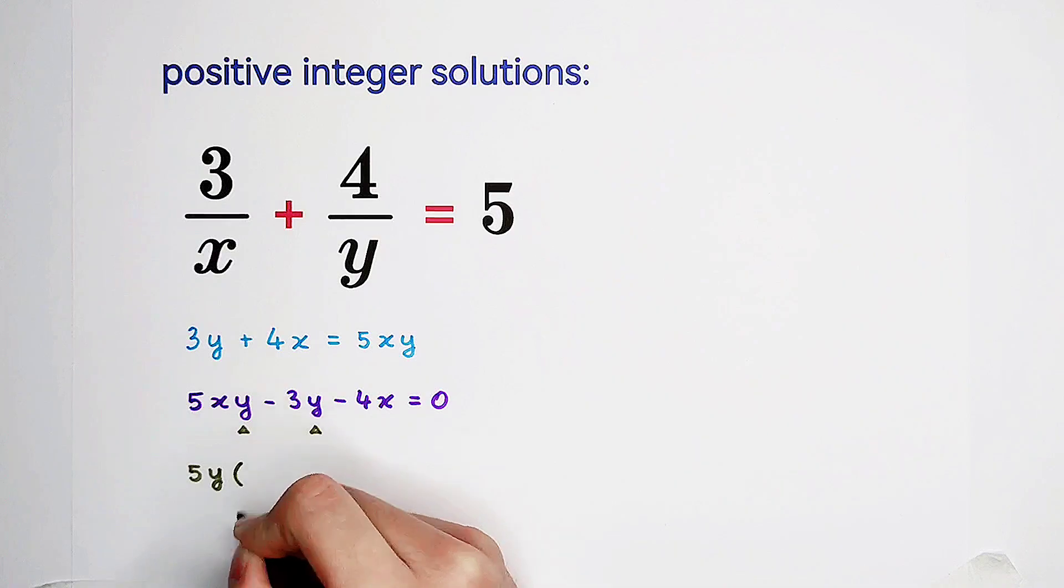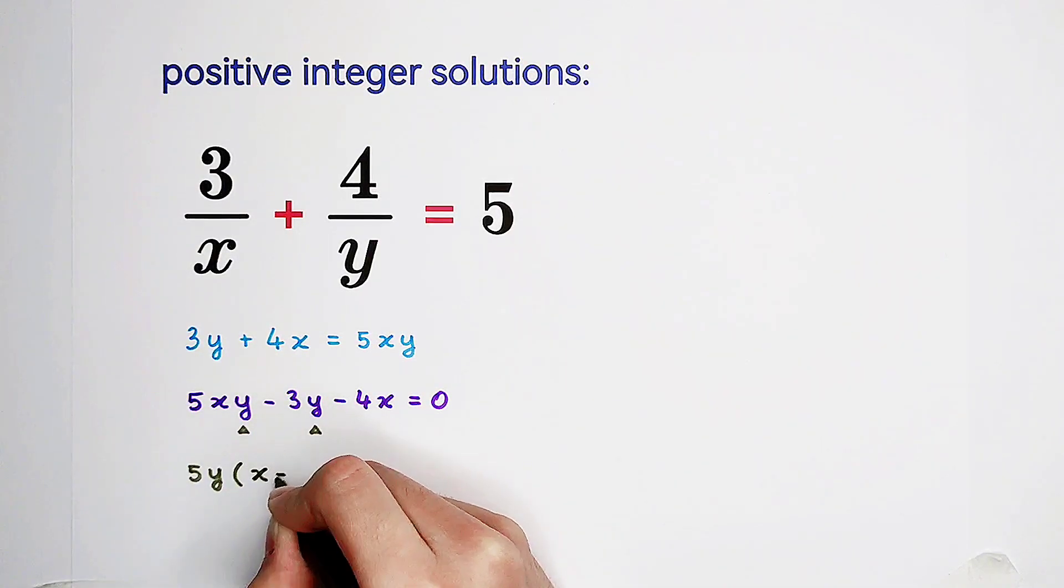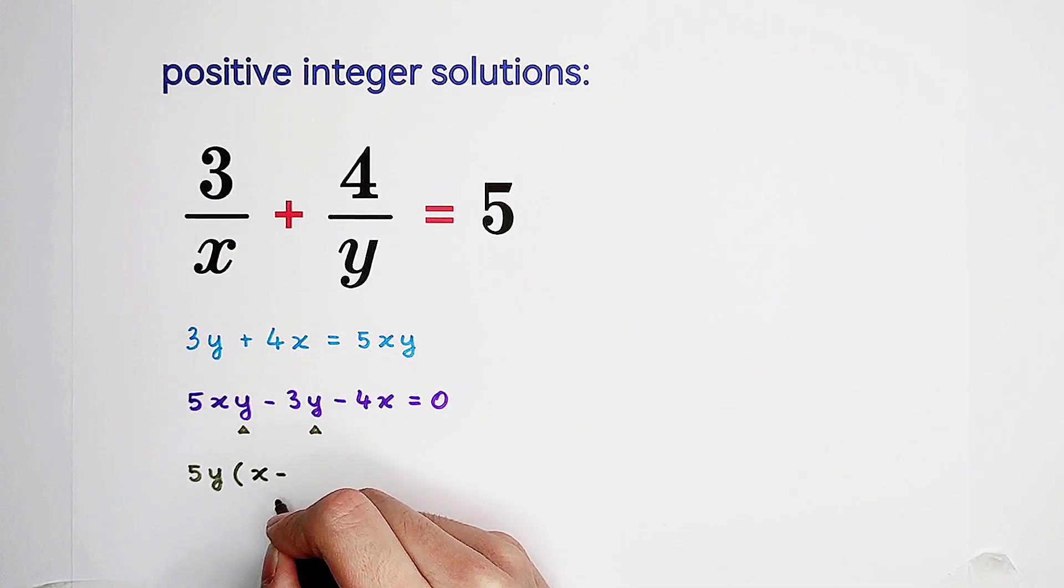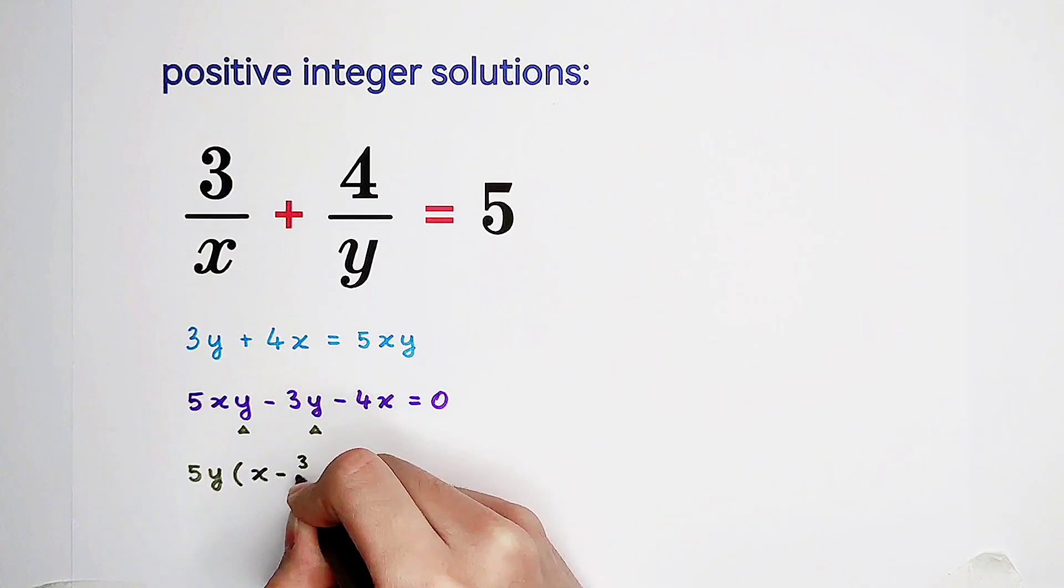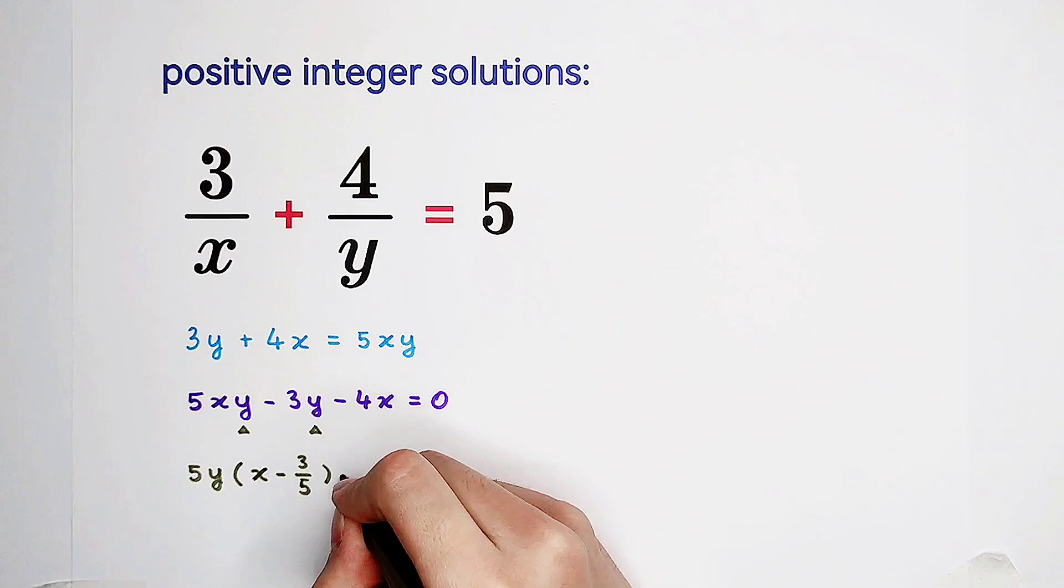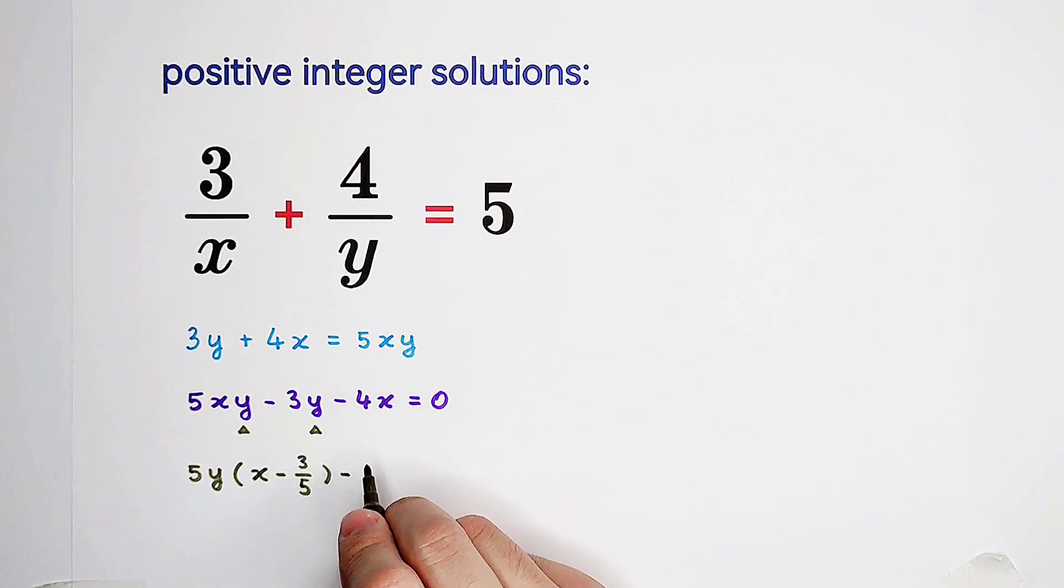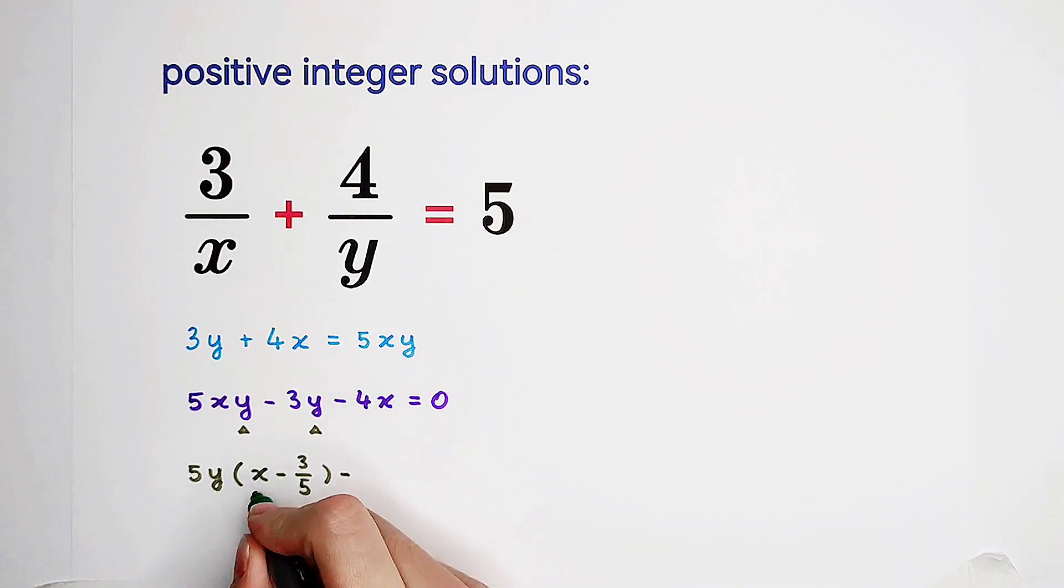So here, 5y times we have x minus, what's this? 3 over 5. Now it's very good. However, we have here minus 4x. Don't worry. Here we have x. Here we have minus 4x. Here is minus 4x. Here is x. So now we can actually take out a 4. But what will happen then? We don't know. Because here we only have a term about x.